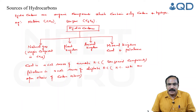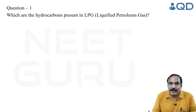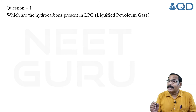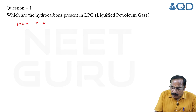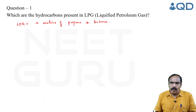Now, which are the hydrocarbons present in LPG? We are all familiar with the domestic fuel liquefied petroleum gas. LPG is mainly composed of propane and butane — the alkane with three carbons is propane, and the alkane with four carbons is butane. So LPG is a mixture of propane and butane, with traces of isobutane also. Butane and isobutane are isomers, which we will discuss in detail.